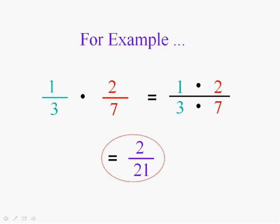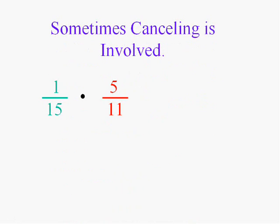The only thing is that sometimes canceling is involved. Now we could multiply the one and the five and multiply the fifteen and eleven, but it would be ugly, wouldn't it? Fifteen times eleven.